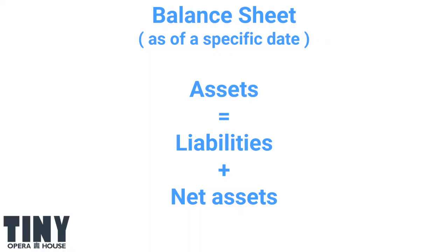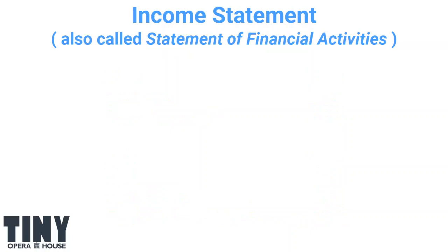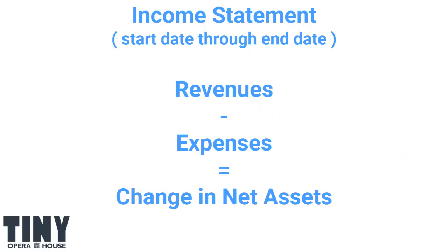We talked about the balance sheet — this is one of those terms that has two names — which shows a snapshot picture of the financial health of the organization at a point in time. We also have the income statement, also called the statement of financial activities, which is a picture of the activities of an organization over a period of time — usually a year, sometimes a quarter or a month.